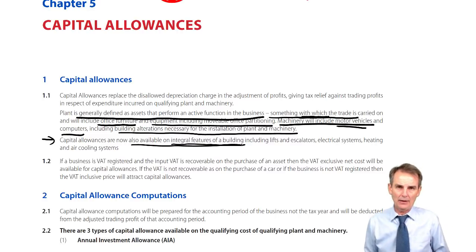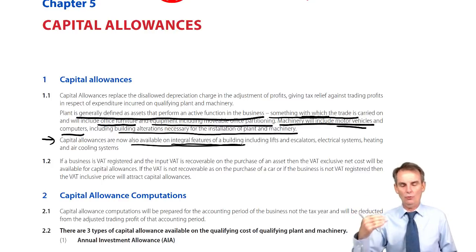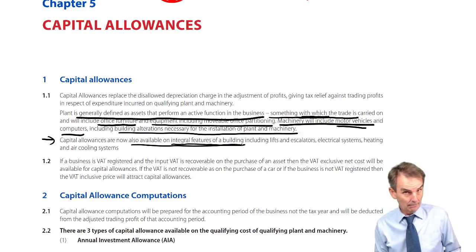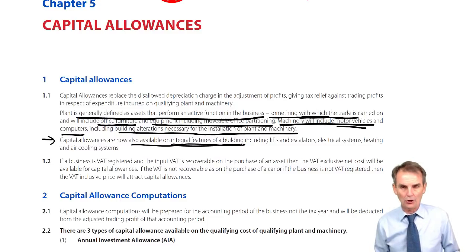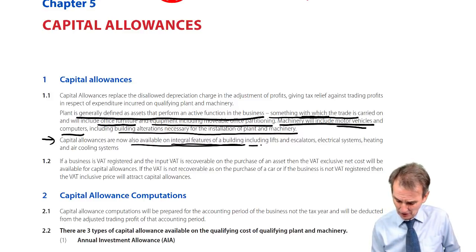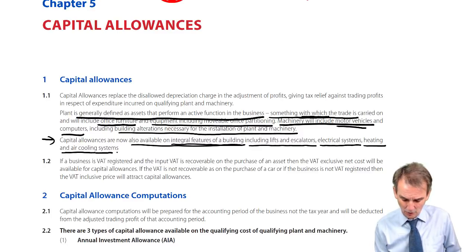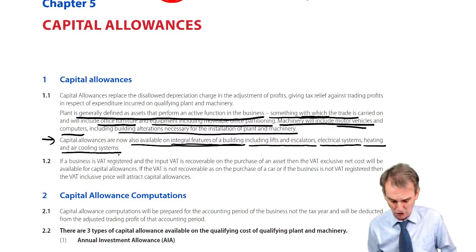However, the examiner doesn't need to use that word, so you should know examples of what we're talking about. When they break out the analysis of a building's costs, what will qualify as integral features would include lifts and escalators within the building, electrical systems, and heating and cooling systems for use within the building. Those would be classified as qualifying plant and machinery.